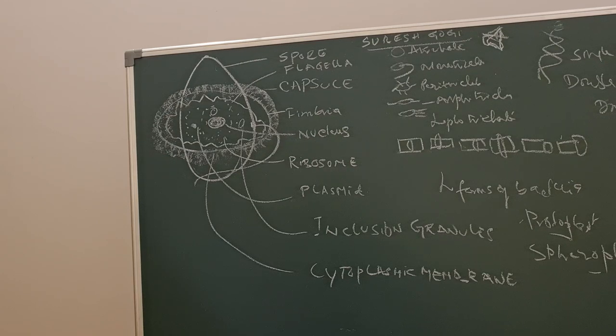It divides where it lacks nucleolus and nuclear membrane. It lacks the Golgi apparatus and does not show cytoplasmic streaming. These are the differences between eukaryote and prokaryote.